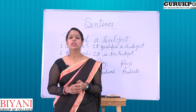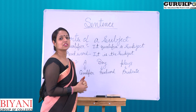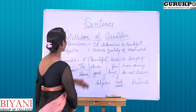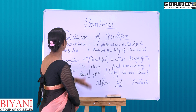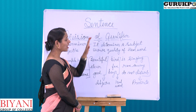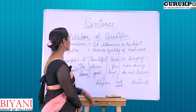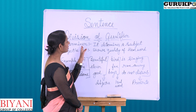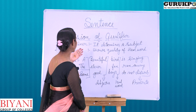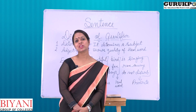Now we will know the different parts of the qualifier — how many kinds of qualifiers there are in a sentence. A qualifier is basically divided into two parts or two types: determiner and adjective. Determiner is that which determines a subject, and adjective is that which shows the qualities of the head word as well as noun and pronoun.